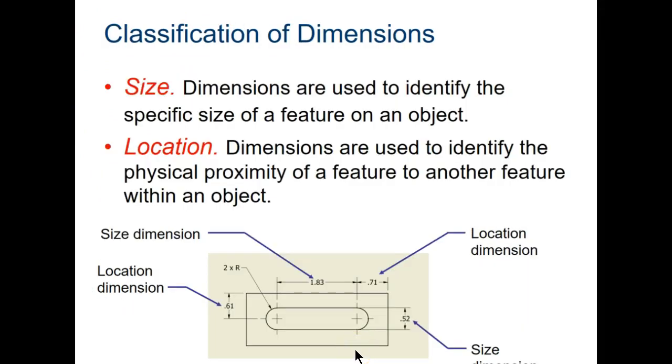There are two kinds of dimension classifications. One is size, where you're describing a specific feature, and the second one is location, where you're indicating where that feature is located. If you look at the diagram at the bottom, we see that this is a size dimension telling us about the slot and how far away these center points are. Then we have this measurement, which is a location measurement, telling us the center point is located this far from this edge.